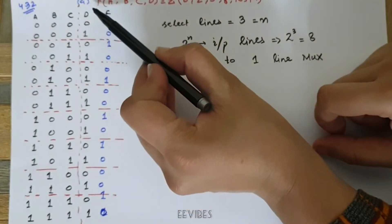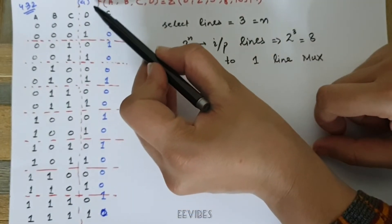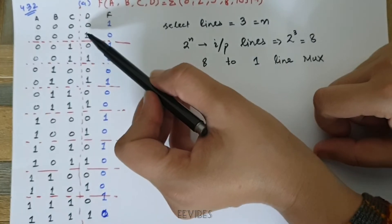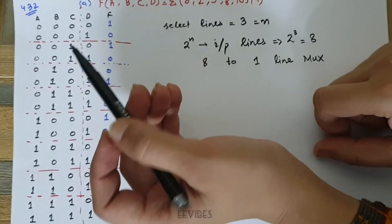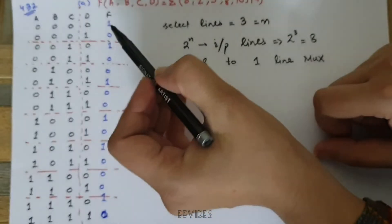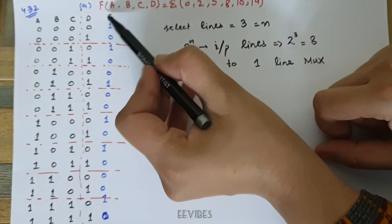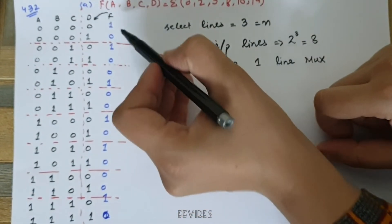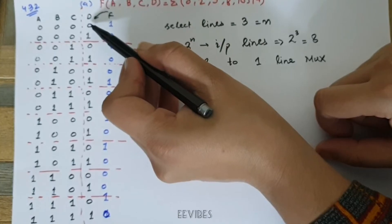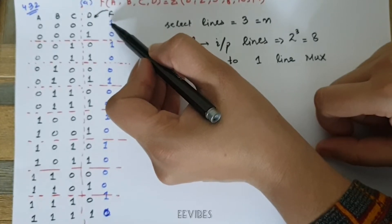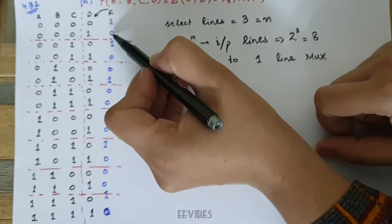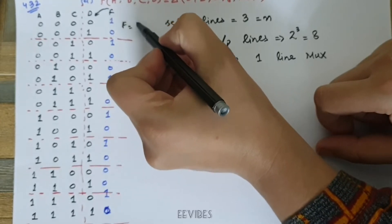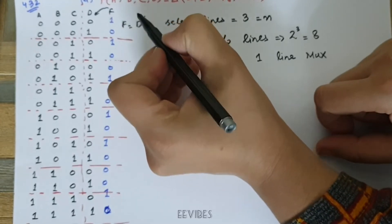The last variable D is very helpful — we will write the function in terms of D. When D is equal to 0, F is equal to 1; when D is equal to 1, F is equal to 0. So this function is actually the complement of D for the combinations where A, B, C are all equal to 0.